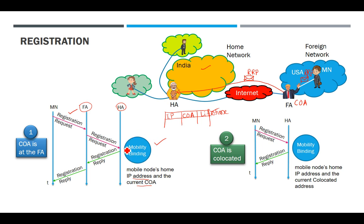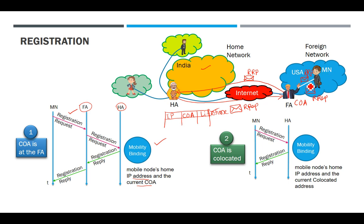After mobility binding, the home agent replies with a registration reply message. This registration reply message is sent from the home agent to the foreign agent, and the foreign agent forwards it to the mobile node. After receiving the registration reply, you are assured that your new address is known to your home agent and further communication will take place via the COA.